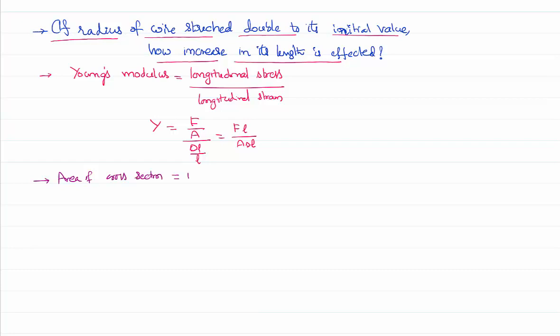Assuming the wire has a circular area of cross-section, pi r squared. If you double the area, area of cross-section is also going to be affected, increased.